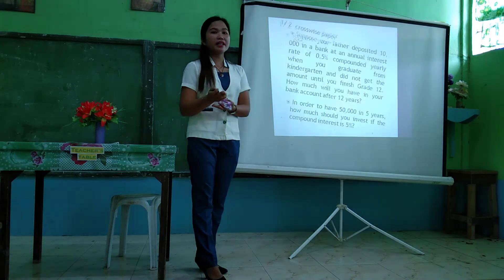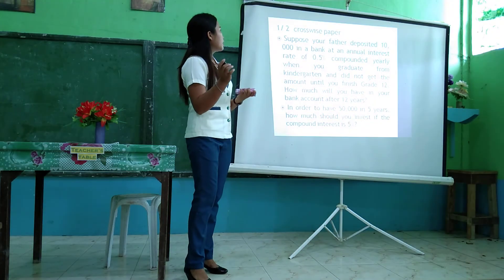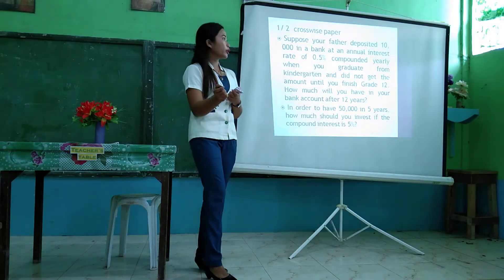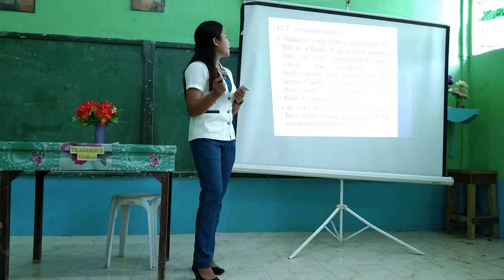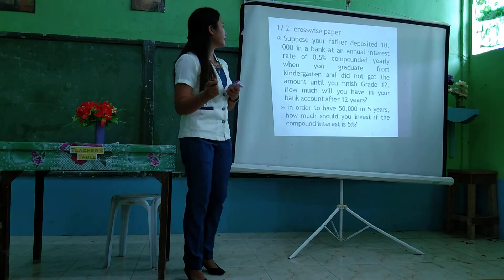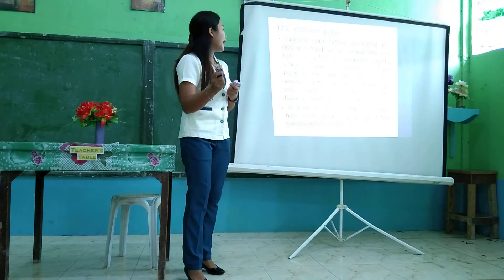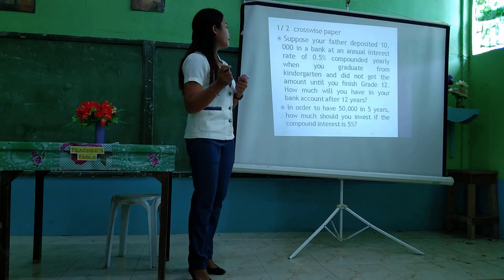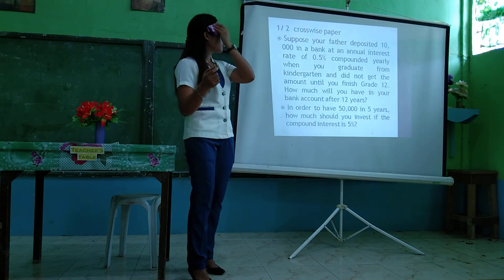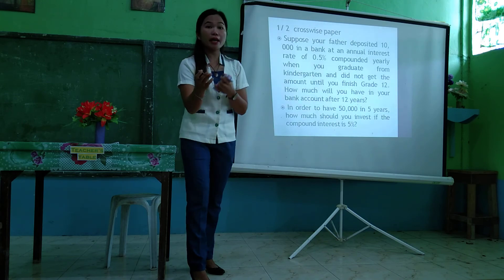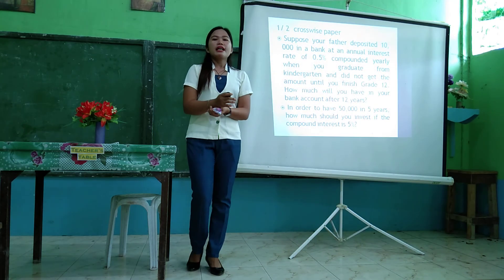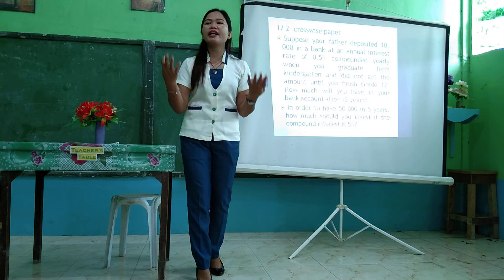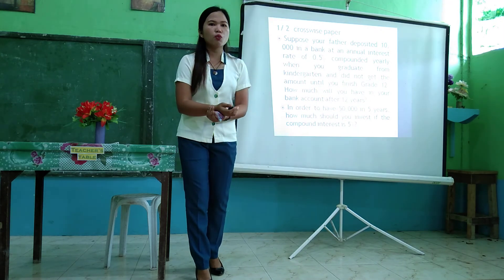I have here another problem. Please get one-half crosswise. Problem 1: Suppose your father deposited 10,000 pesos in a bank at an annual interest rate of 0.5% compounded yearly when you graduated from kindergarten, and did not withdraw the amount until you finished Grade 12. How much will you have in your bank account after 12 years? Problem 2: In order to have 50,000 pesos in 5 years, how much should you invest if the compound interest rate is 5%? I will give you 20 minutes to answer.